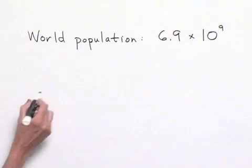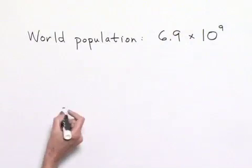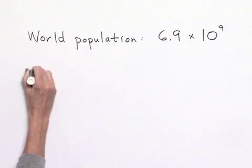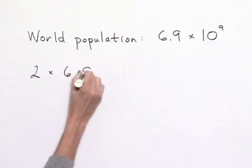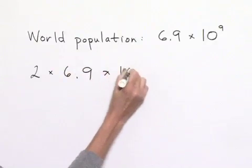So we have our world population given to us, and we're asked to double it. That means we're going to be looking at 2 multiplied times 6.9 × 10^9.